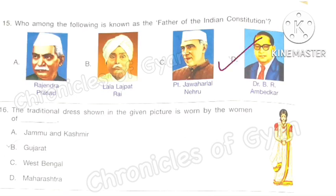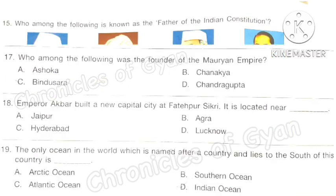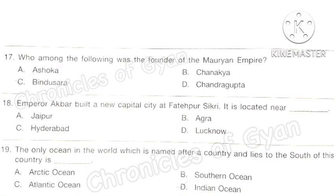Question 16: The traditional dress shown in the given picture is worn by the women of which state? This is a lal-paar saree and it is worn by the women of option C: West Bengal. Question 17: Who among the following was the founder of the Mauryan Empire? The correct answer is option D: Chandragupta Maurya.